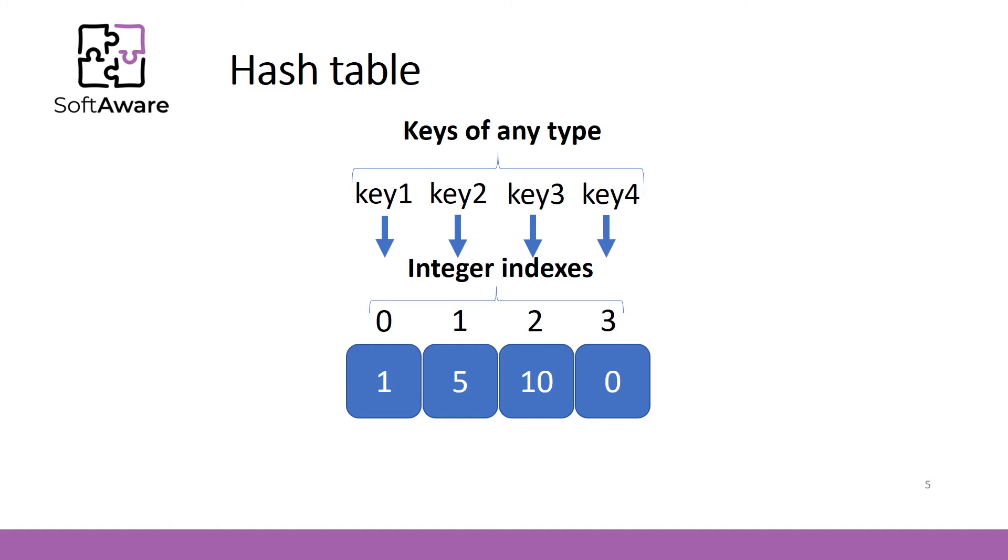The key can be a number, text or any object defined by programmer himself. The keys serve as indexes in hash table. And the values associated with keys are stored in the underlying array. A big question is how these keys are mapped to a certain indexes of the array.